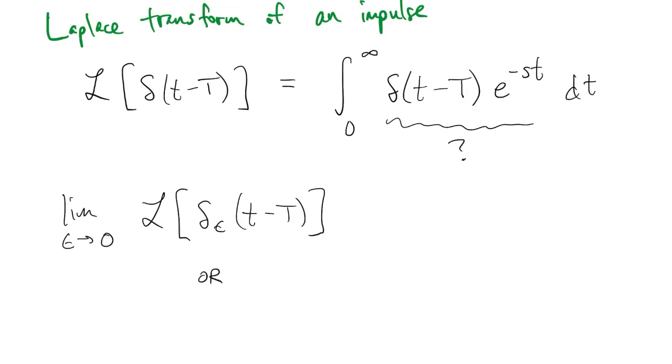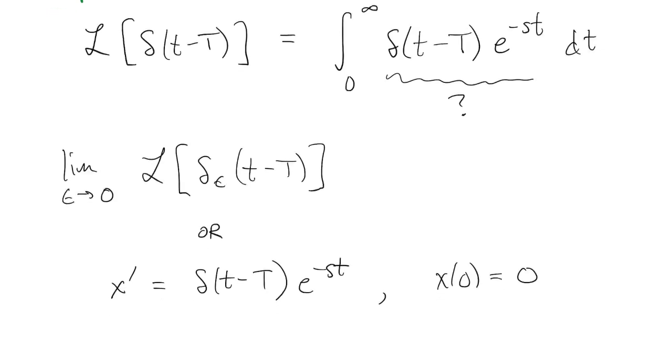Or you could solve the initial value problem, x prime equals delta times the exponential. Either way, you would get the result. And it turns out to be very simple.